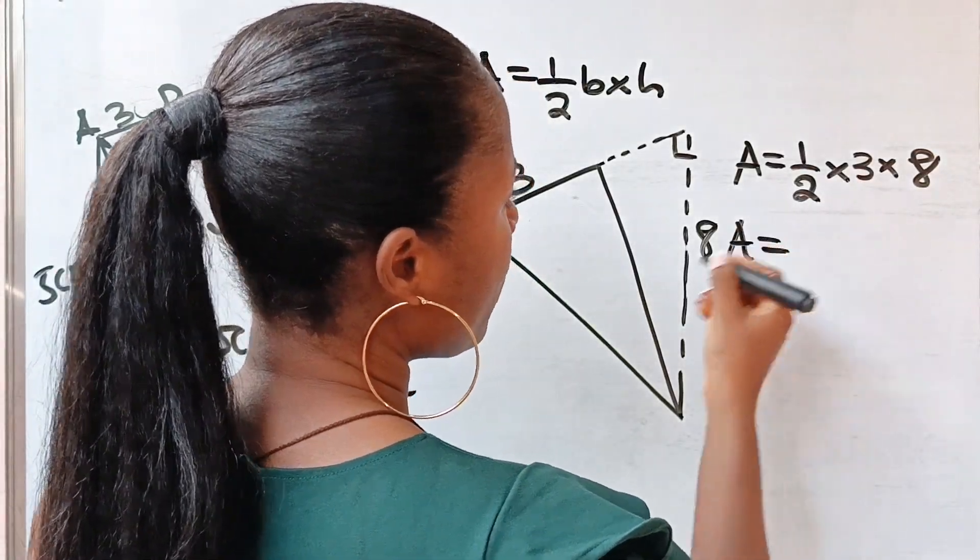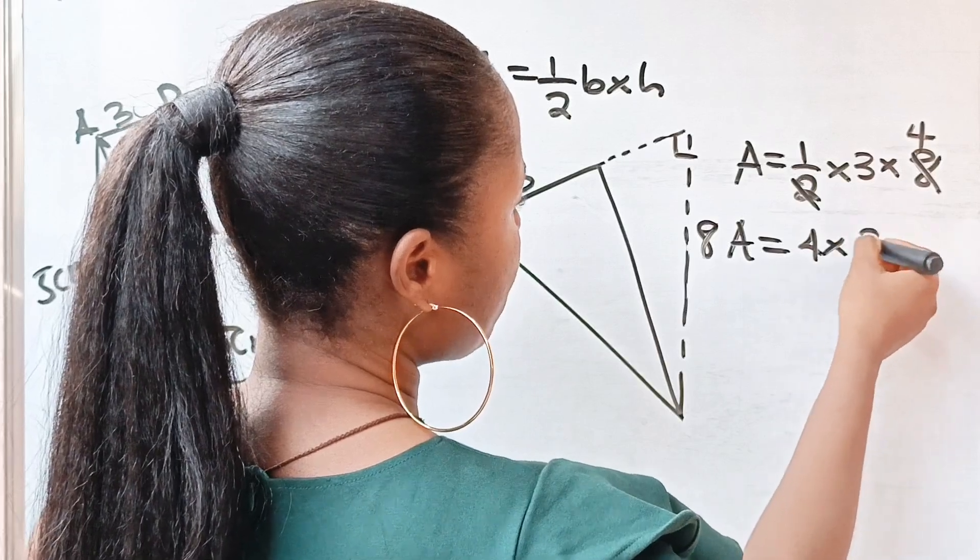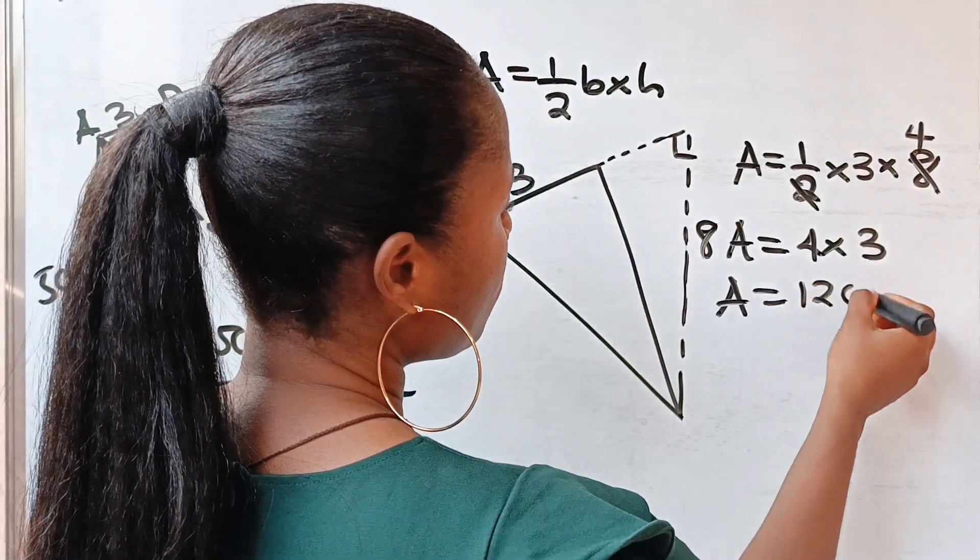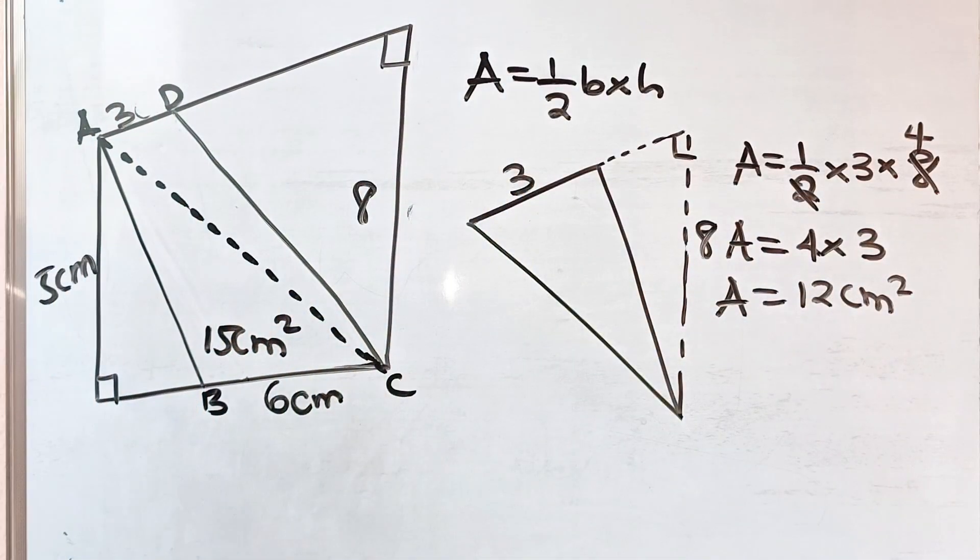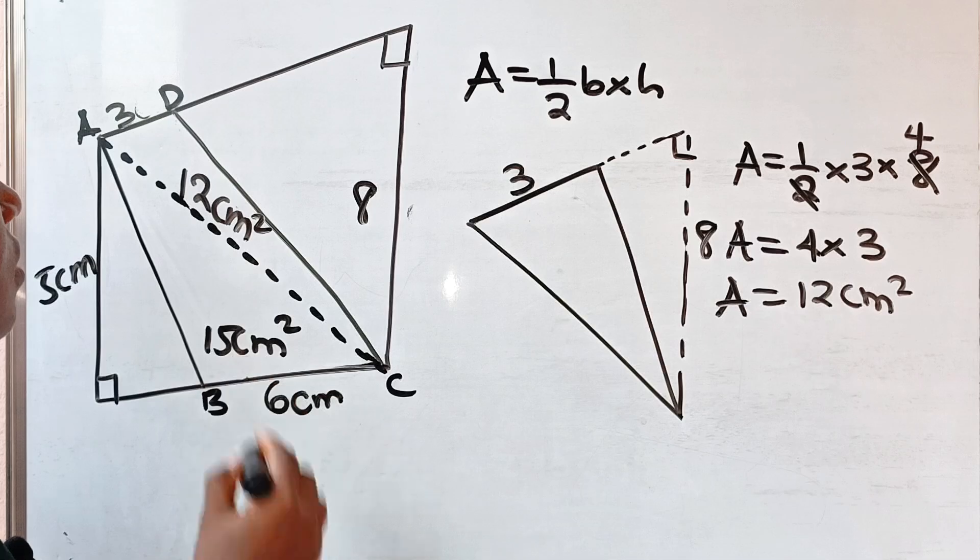So the area is, when 2 divides this, you have 4. 4 multiplied by 3. So the area is 12 square centimeters.